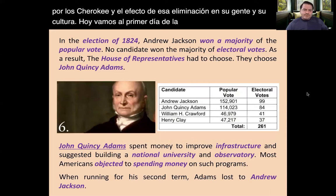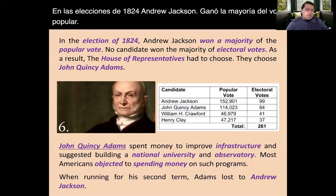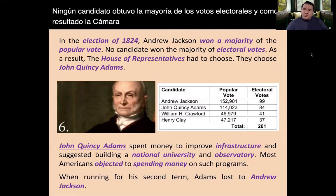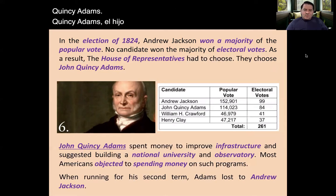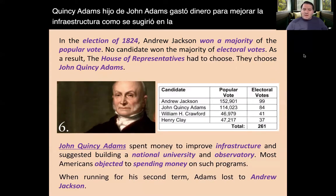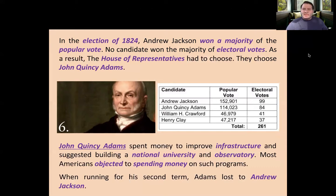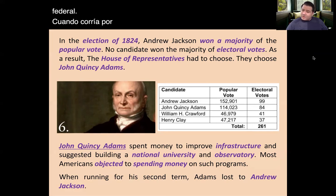Our objective is to examine the growth of suffrage for white men during Andrew Jackson's administration, and to examine the conditions faced in the Trail of Tears by the Cherokee and the effect of that removal on their people and their culture. We're going to understand what Jacksonian Democracy means. In the election of 1824, Andrew Jackson won the majority of the popular vote. No candidate won the majority of electoral votes, and as a result, the House of Representatives chose John Quincy Adams.